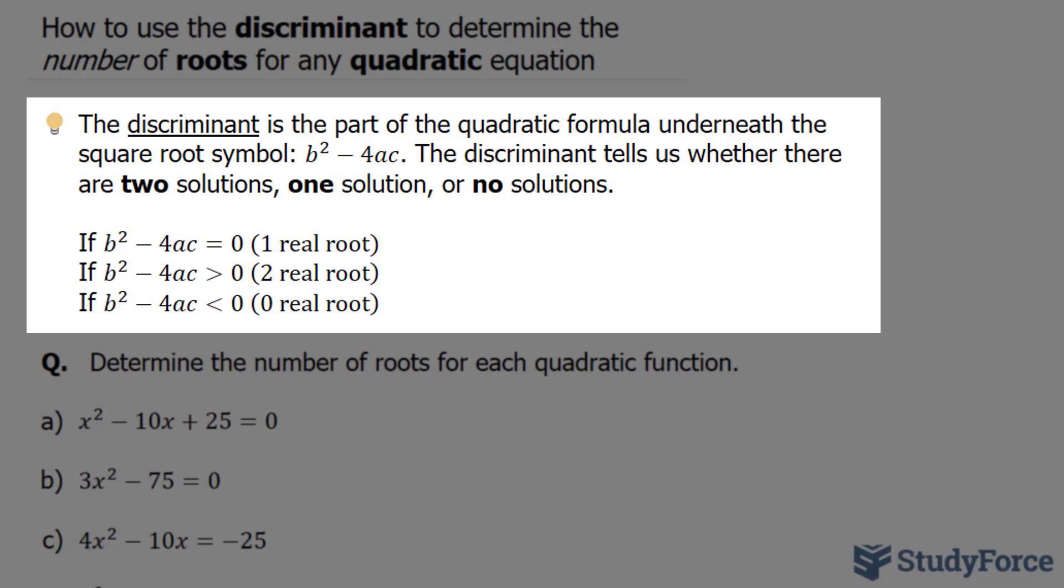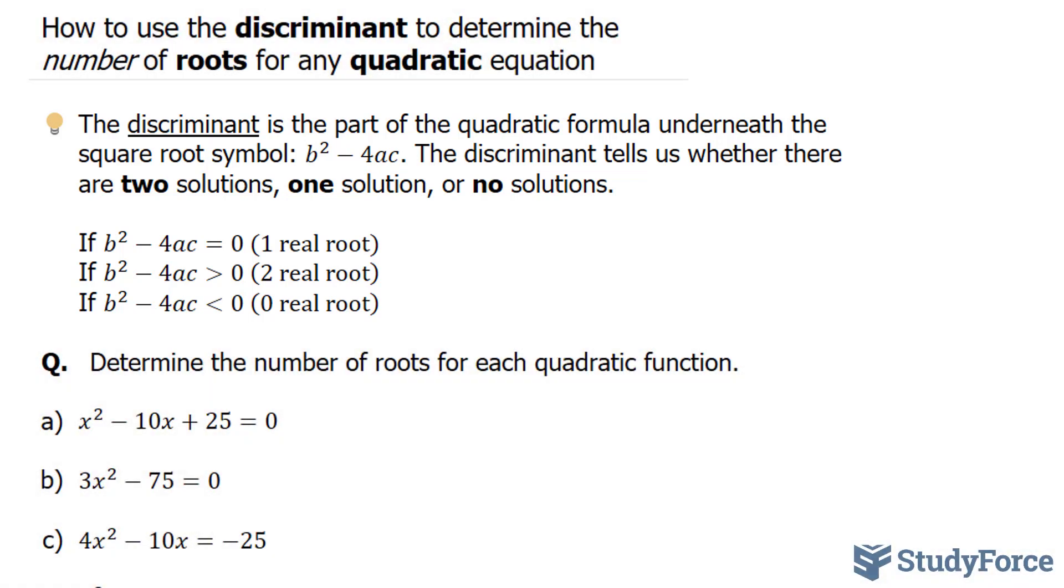The discriminant tells us whether there are two solutions, one solution, or no solutions at all. If your discriminant equals 0, there is only one real root. If it is greater than 0, then you have two roots, and if it's less than 0, you have no real roots.